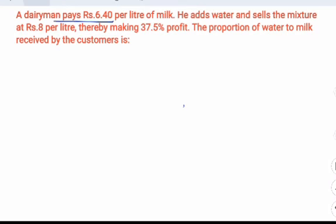So the dairyman purchases the milk at 6.4 rupees per liter. He adds water and sells the mixture at 8 rupees per liter thereby making some profit. We have to calculate the proportion of water to milk.